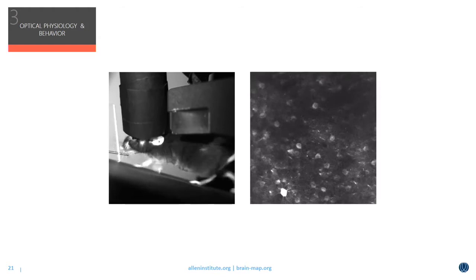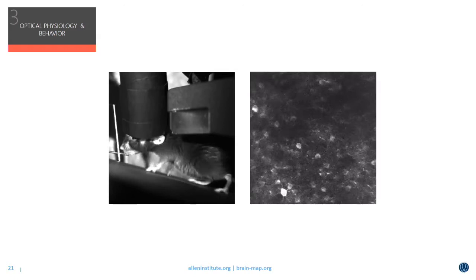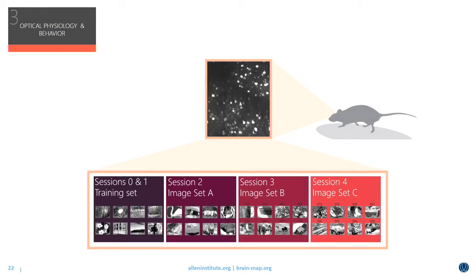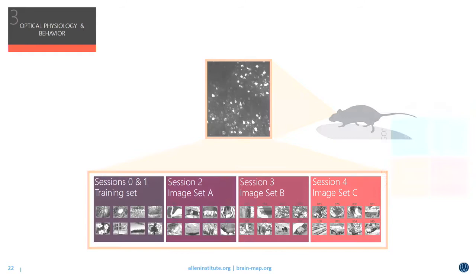When mice are first transferred from behavior training to imaging, they've only seen the training image set — those eight natural images. Over the course of imaging, they'll be exposed to three novel image sets of eight images the mouse has never seen before. This raises questions: how does performance change when they're transferred from their training environment to a new imaging environment, and are the mice actually able to generalize this task from the images they learned on to novel image sets?